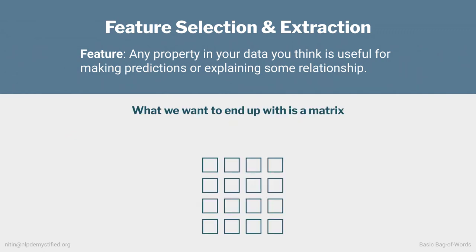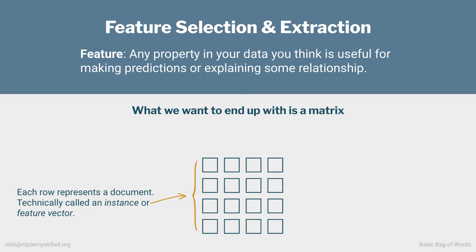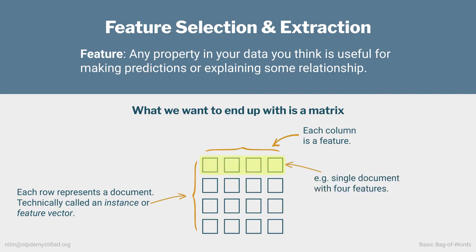To clear up some terminology: when we pull features from a data set, it's called feature selection. But you may also come across a term called feature extraction, which is different. Feature extraction is combining features to create new ones, or reducing the number of features through a technique called dimensionality reduction. Ultimately, we want to take these features and end up with a matrix. In NLP, each row of this matrix represents a document. In formal ML terms, each row would be called an instance or feature vector, and each column represents a feature. If you have 100 documents from which you pulled five features, your matrix would be 100 by 5.